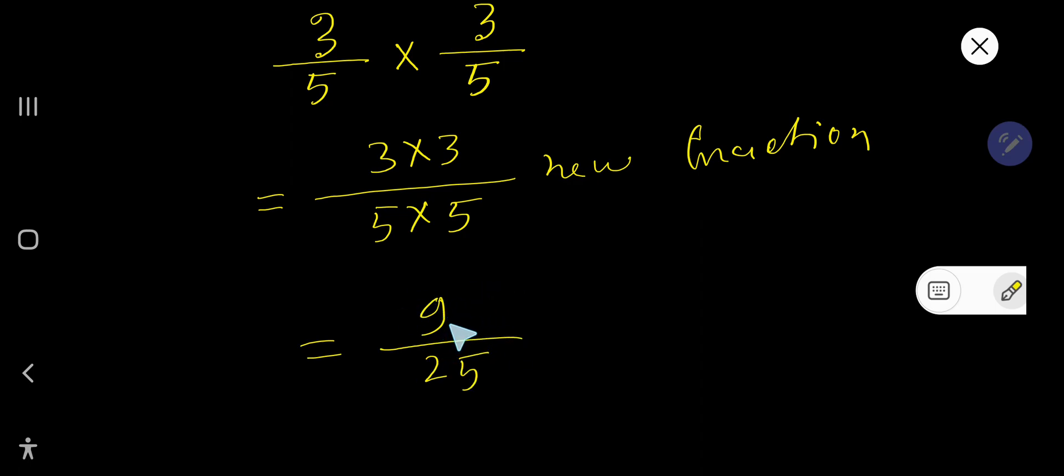If you divide this 9 by 2 you will get a remainder, if you divide this 25 by 2 you will get a remainder. So from this you can say that this is the reduced fraction and this is the answer.